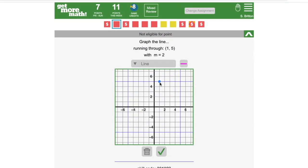To graph a line, you just need to plot two points in the same way that we just did, and Get More Math will draw the line between them.